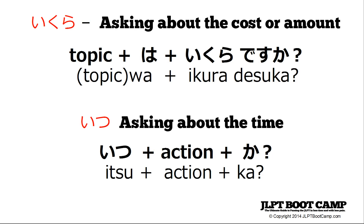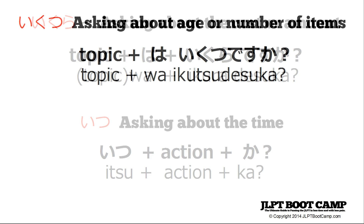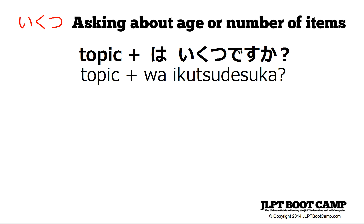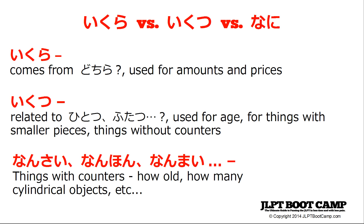Quick review: ikura is used to ask about amounts — how much of something; itsu is to ask about when; ikutsu is to ask about age or number of items countable with hitotsu, futatsu, mittsu. Ikura is used almost always for price at the N5 level. Ikutsu is for age and things with generic tsu-counters. Nan is used for everything else with regular counters — nan sai, nan hon, nan mai.